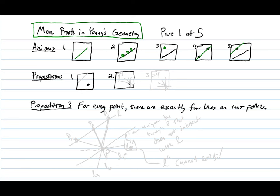In Proposition 1, we proved that given any point in the geometry, there exists a line that does not contain the point. And in Proposition 2, we showed that each point has at least four lines on that point. Now for Proposition 3, we're going to prove that there are in fact exactly four lines on that point.